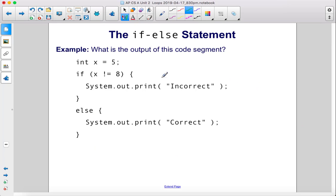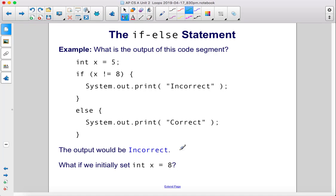What is the output of this code segment? Int x equals 5. If x does not equal 8, well, this is true because x is 5. X does not equal 8. Therefore, we will execute this statement. It will print incorrect. The output would be incorrect.